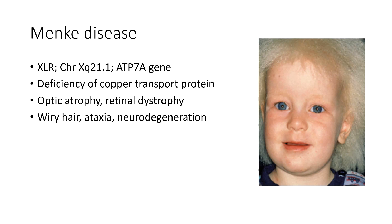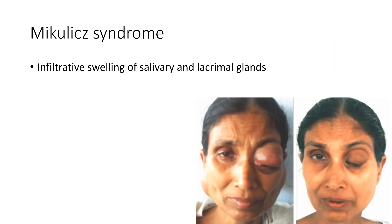Next is Menkes disease. It is an X-linked recessive condition involving the ATP7A gene. It occurs due to deficiency of copper transport protein. The ocular features include optic atrophy and retinal dystrophy. The systemic features include wiry hair, ataxia, and neurodegeneration.